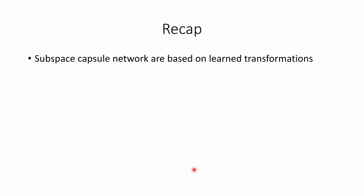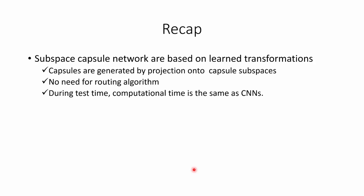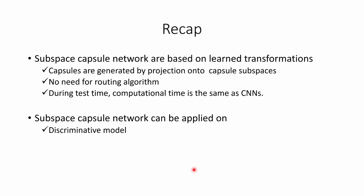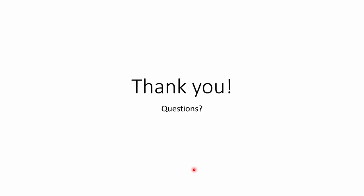To summarize: subspace capsule networks are based on a learned transformation where capsules are generated by projection into capsule subspaces. No routing is required in this model, and at test time the computational cost is the same as a regular network — no time overhead. Subspace capsule networks can be applied to both discriminative models and generative models. Thank you.